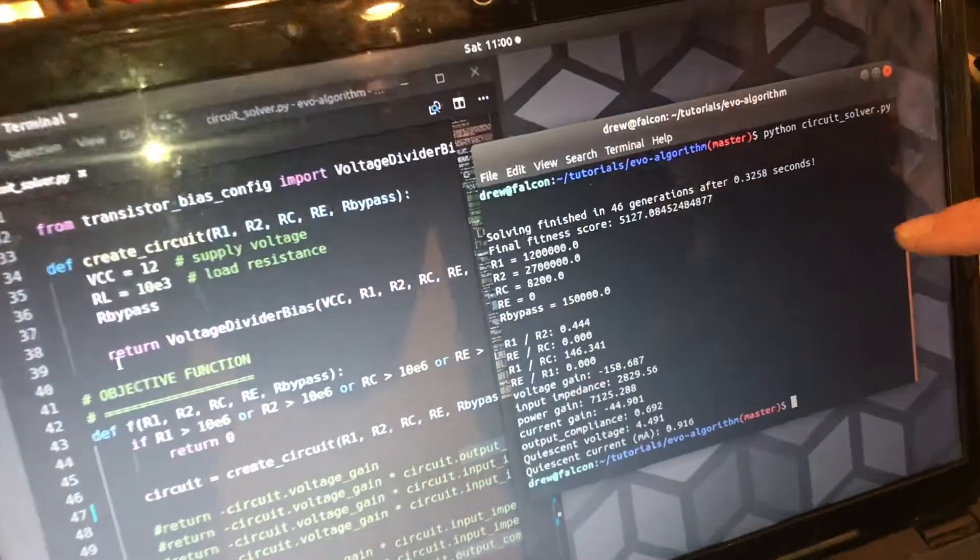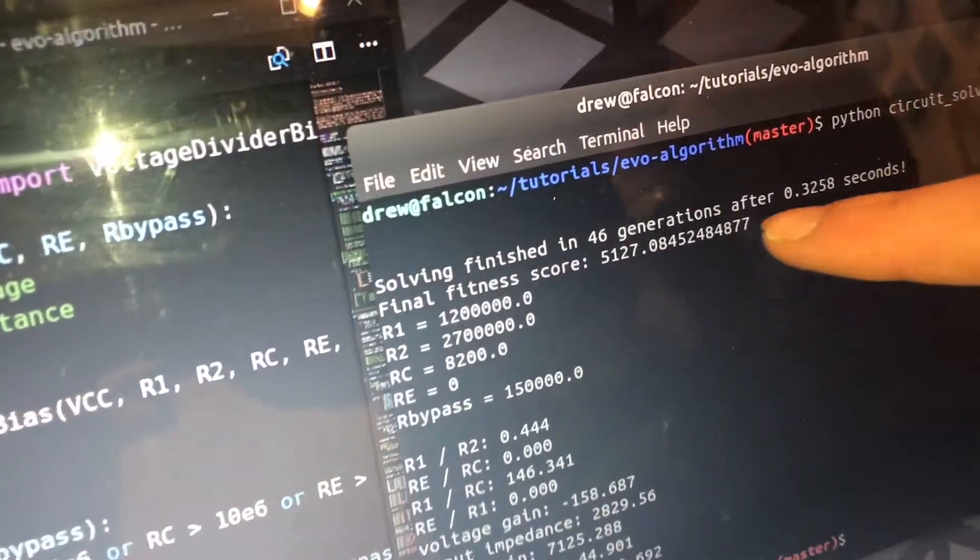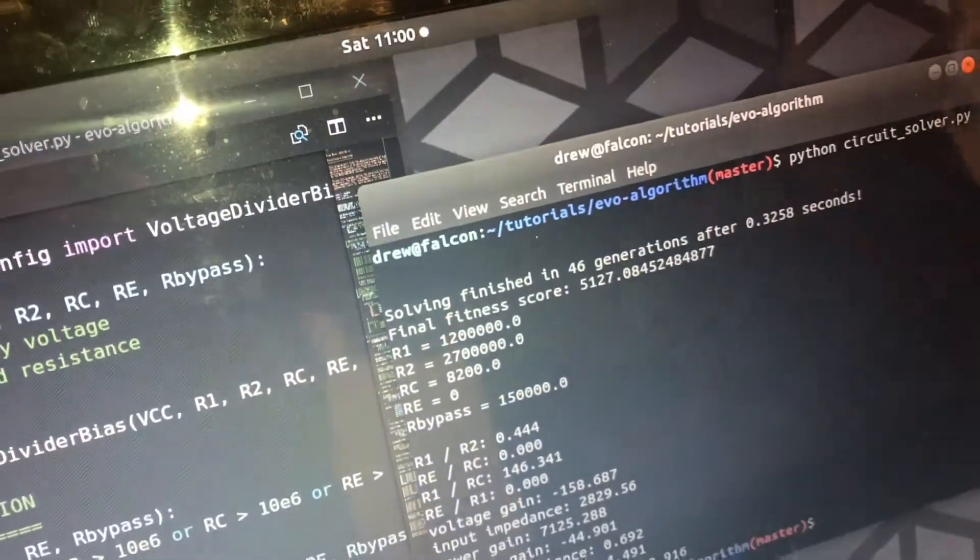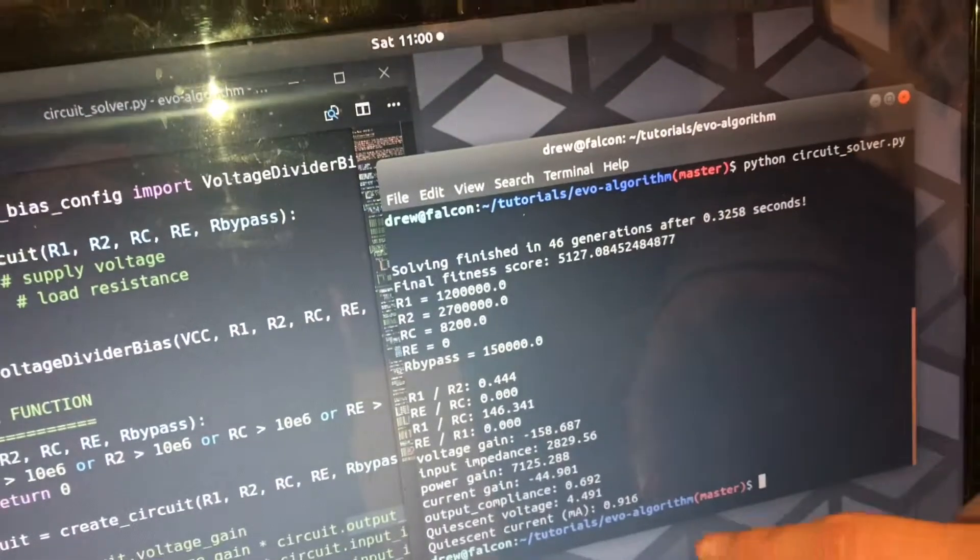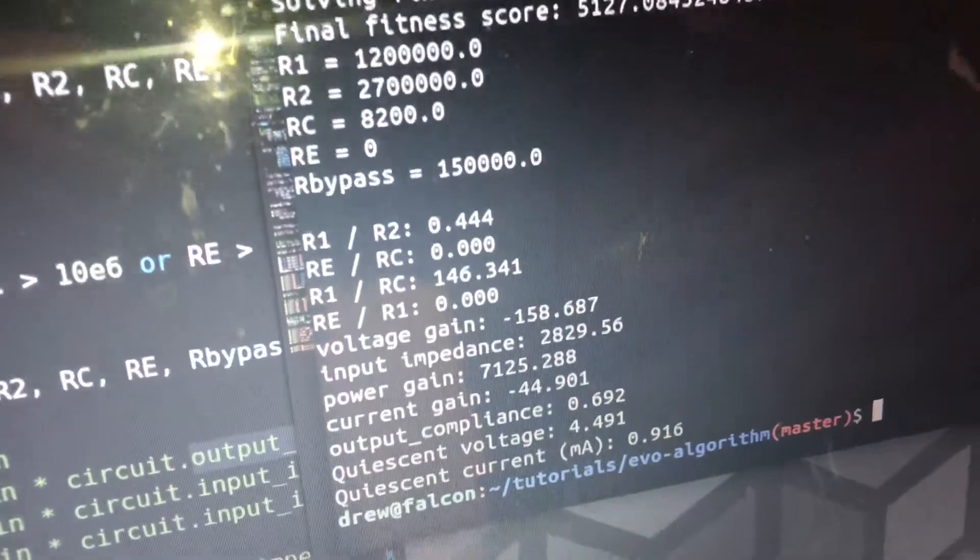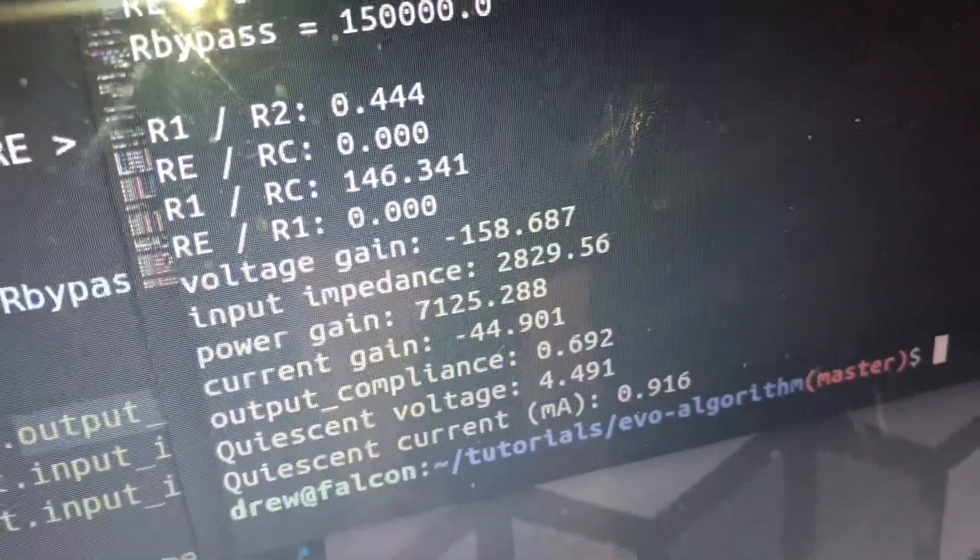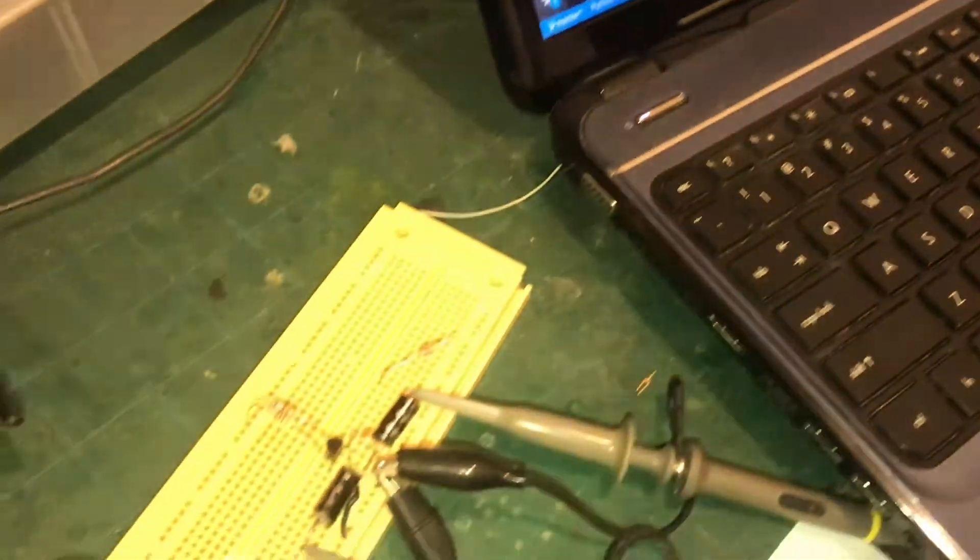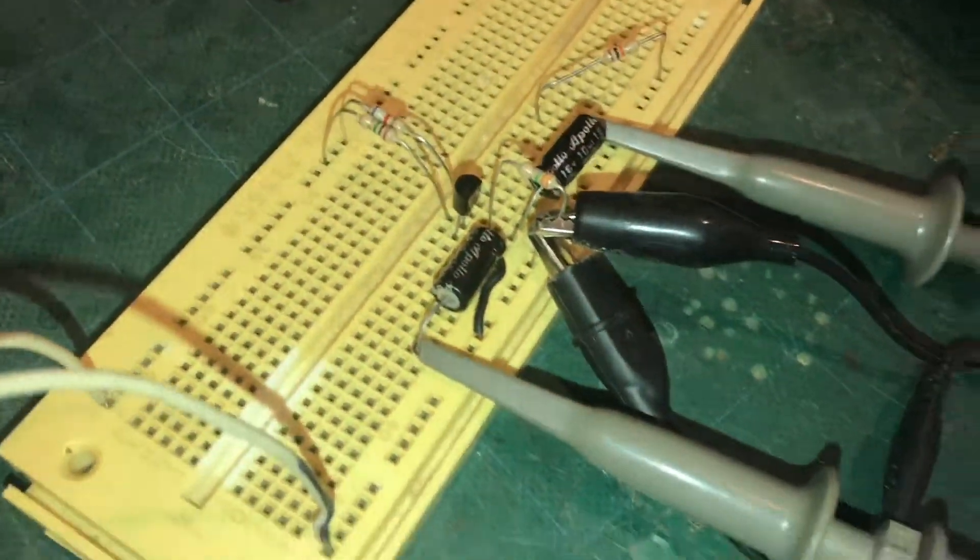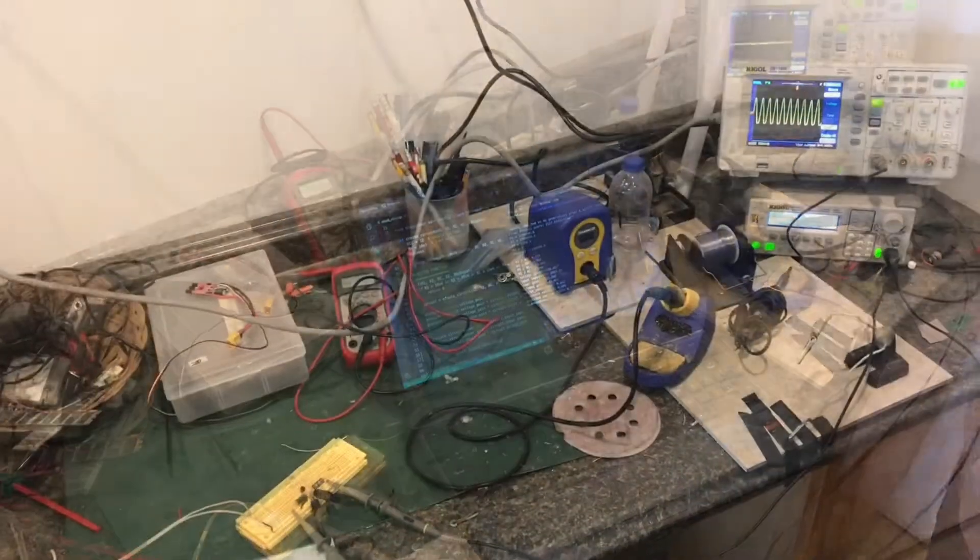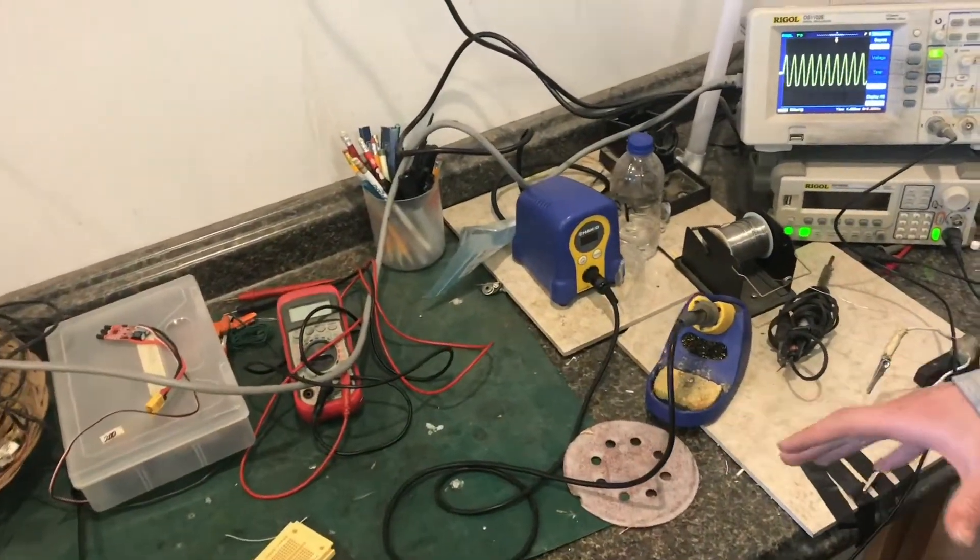So I just ran, here I'll run it again so you can see what it does. It only takes a second to run, it finished in about 0.3 seconds which is pretty good. It made 46 attempts and in the end it was able to build a single stage transistor amplifier with a power gain of about 7,000, which means the little signal going into the amplifier will come out of the amplifier 7,000 times stronger, which is actually very good for a single transistor.